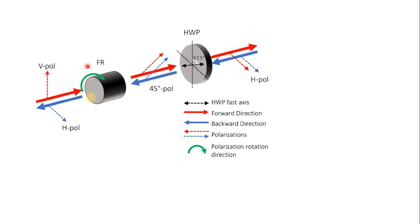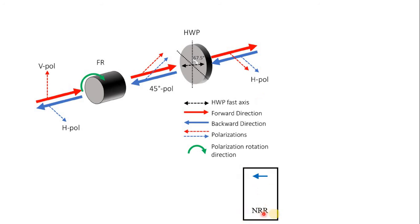First I will need the combination of a Faraday rotator and a half-wave plate. If I start from vertical polarization and put it through the Faraday rotator, the Faraday rotator rotates it by 45 degrees. Then a half-wave plate oriented at the right angle with respect to this polarization means it will come out horizontally polarized. And the other way around: if I put in horizontal polarization, it will go to 45 degrees, because this is reciprocal. But passing through the Faraday rotator, it won't go to vertical, but rather to horizontal polarization, because the Faraday rotator is a non-reciprocal device.